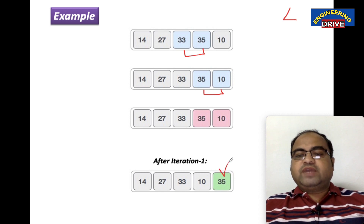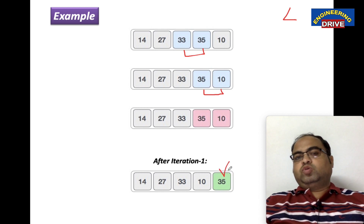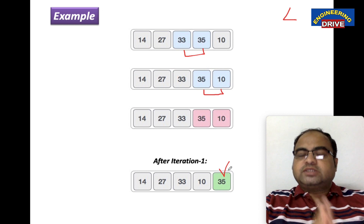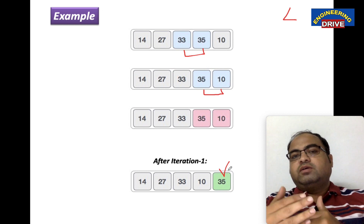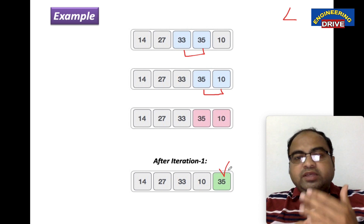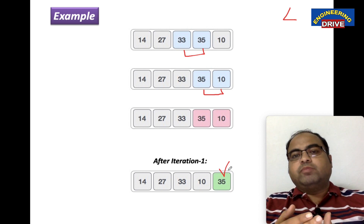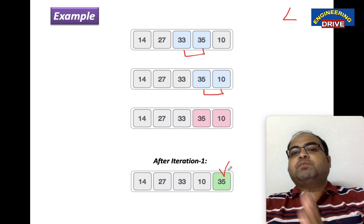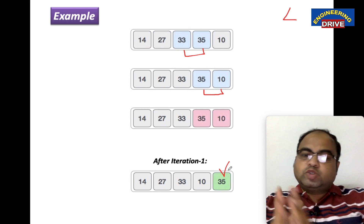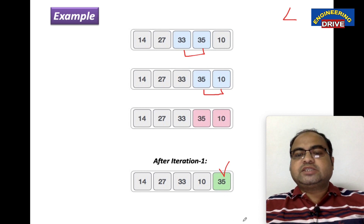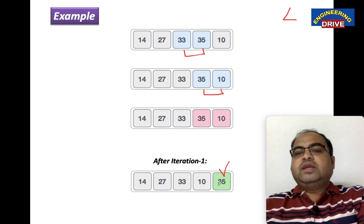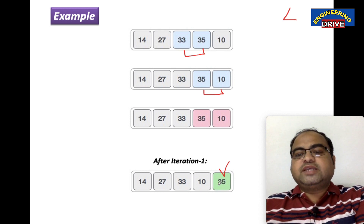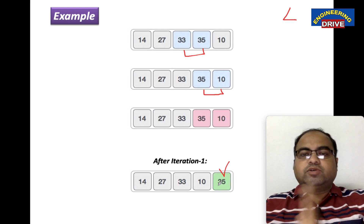After the first iteration, 35 is now in the safe place — 35 is in the safe zone. In bubble sort, the largest number will come to the right side. 35 is the largest number in the entire set, and after iteration 1 it is placed in the safe zone.